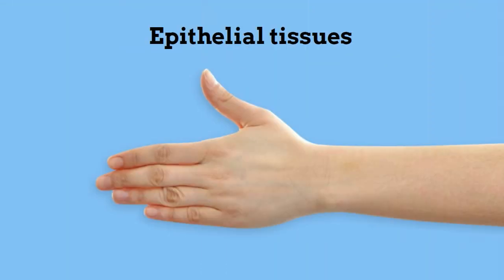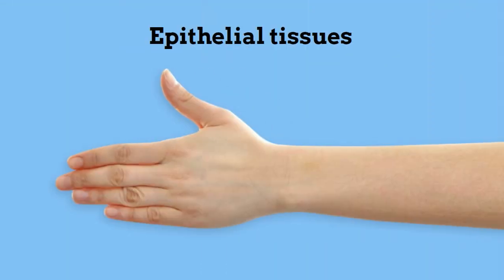Epithelial tissues are surface tissues like our skin and the lining of our stomach.